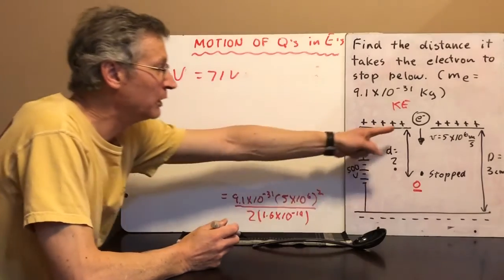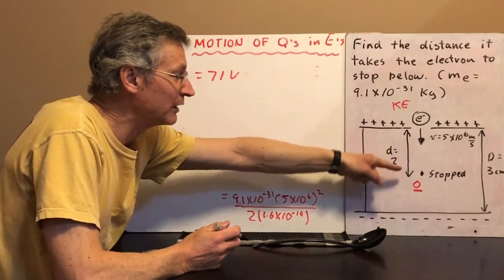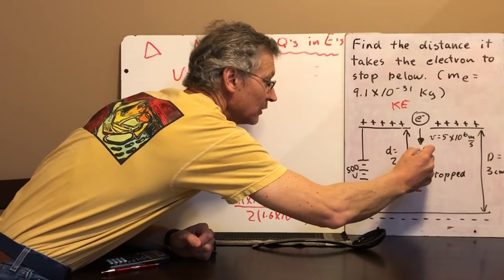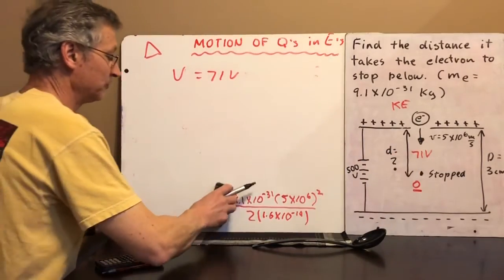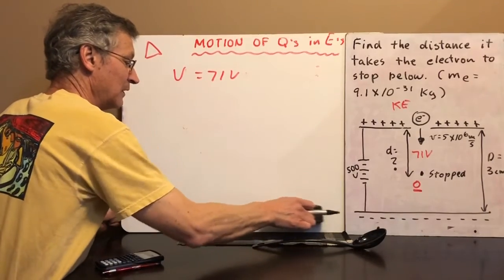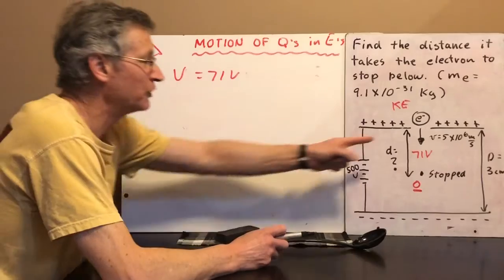So you grind this through your calculator, and you get that your voltage is equal to 71 volts. In other words, between there and there, the electron is moving through 71 volts of potential difference. Now the question is, what's this distance?